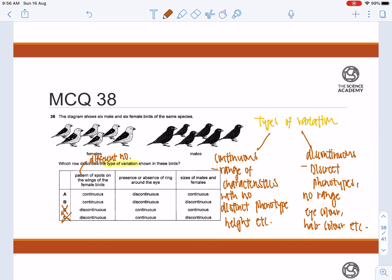So you have a range of the number of spots. Let's move on to the next category. Presence or absence of ring around the eye. It's a discontinuous variation. This is because it is a discrete phenotype. It is very distinct. It's either you have it or you don't have it. It's a yes or a no.